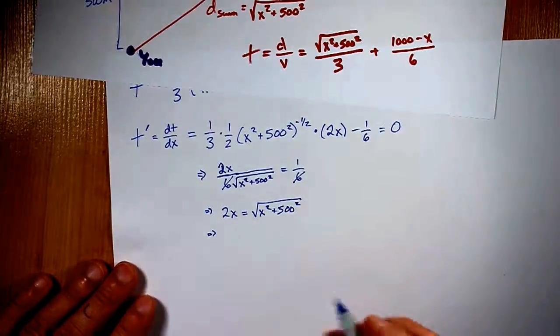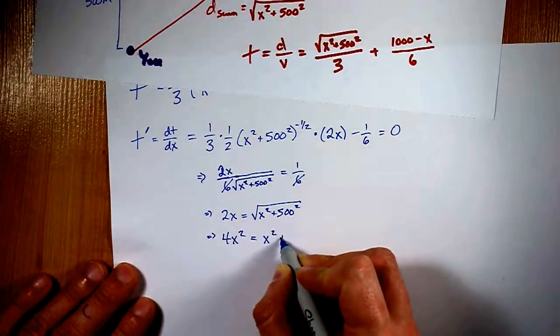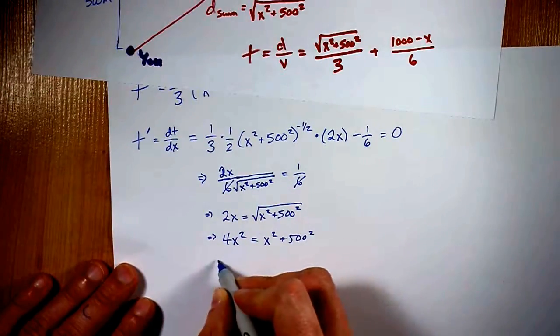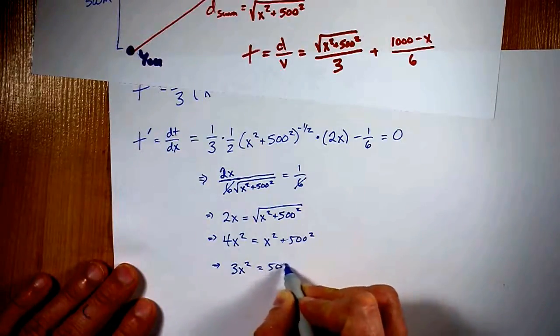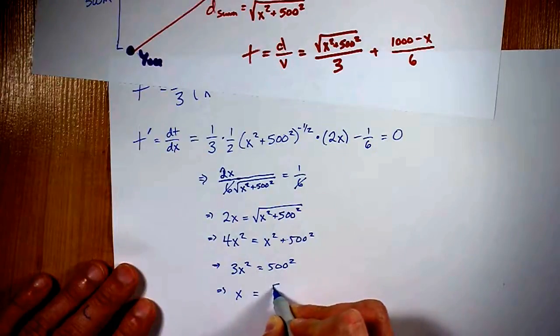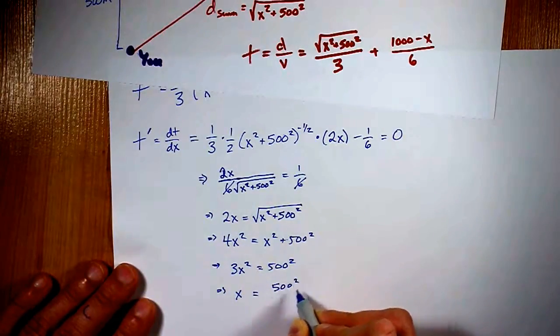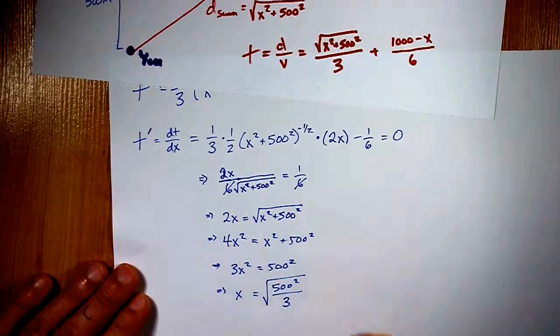That gives me 4x squared equals x squared plus 500 squared. I'm going to move the x's all to one side, that's 3x squared equals 500 squared. I'm going to solve for x by taking this 500 squared, dividing it by the 3, and square rooting it.